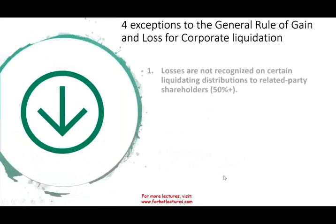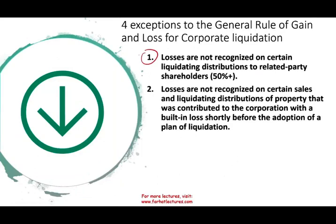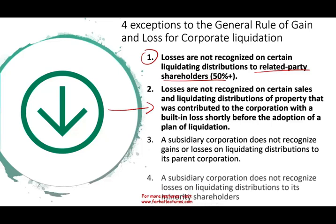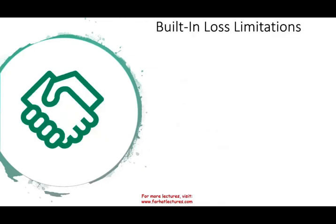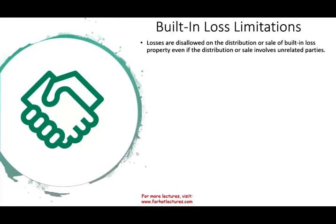This is what we did in the prior session — we looked at related party losses and said we cannot take those. In this session, we're going to focus on number two, and in the following session we'll cover numbers three and four. We're talking about the built-in loss limitation. Simply put, you have a loss but you cannot take it. Losses are disallowed on the distribution or sale of built-in loss property, even if the distribution or sale involves an unrelated party — even someone who doesn't own 50% plus — those losses will still be disallowed.